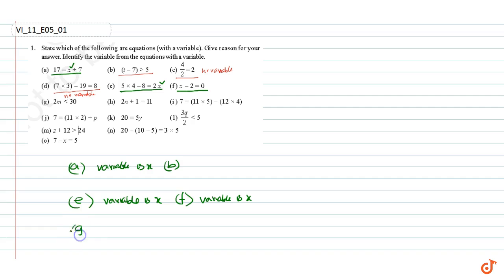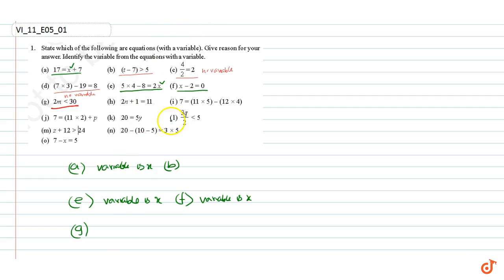Part g: this is an inequality. Part h: this is an equation with a variable n, so the variable is n.